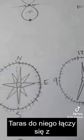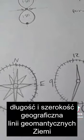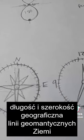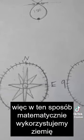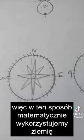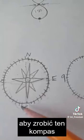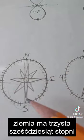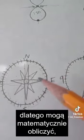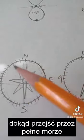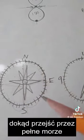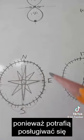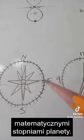It ties into the longitude and latitude of the ley lines of the Earth. That's how they've mathematically used the Earth to make this compass. The Earth has 360 degrees, so they can mathematically figure out where to go through the high seas, because they can use the mathematical degrees of the planet.